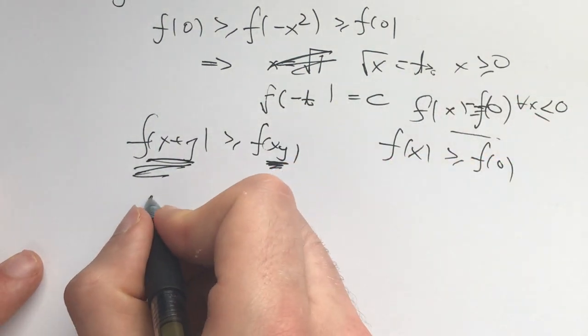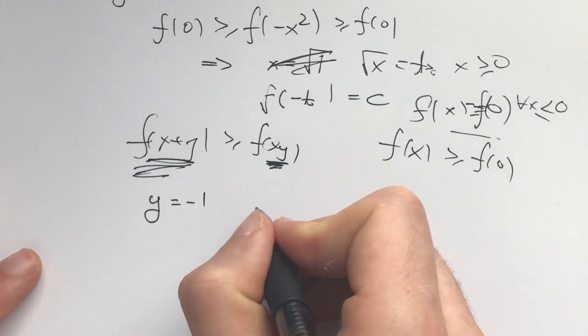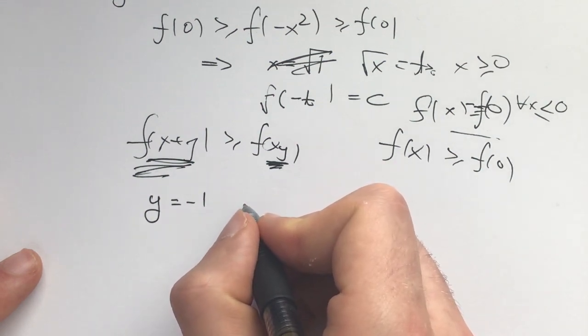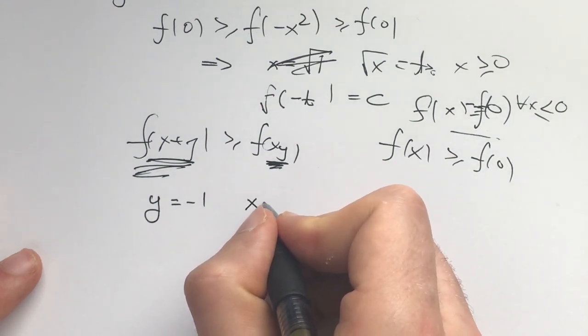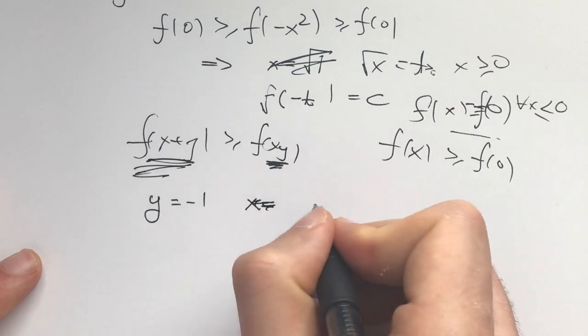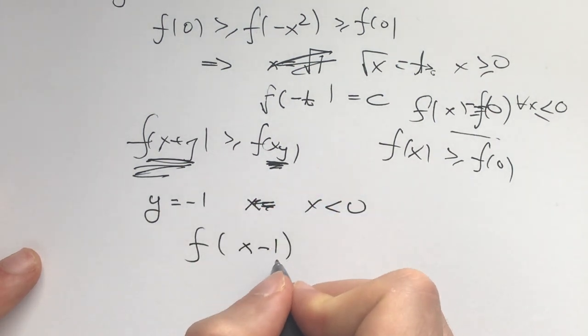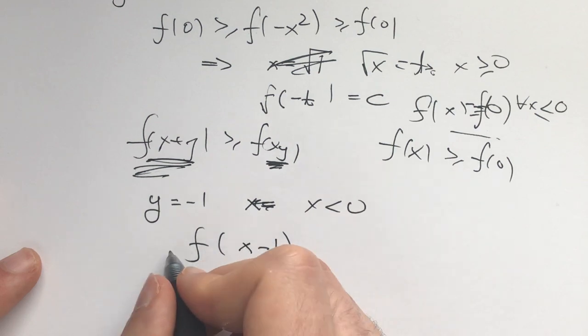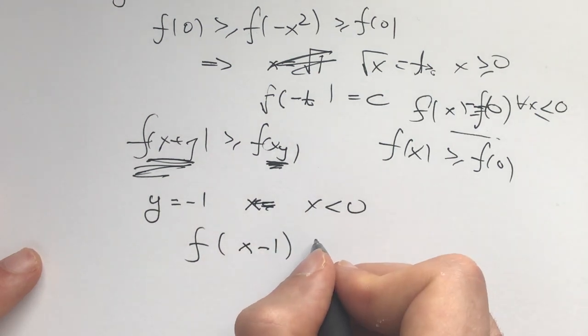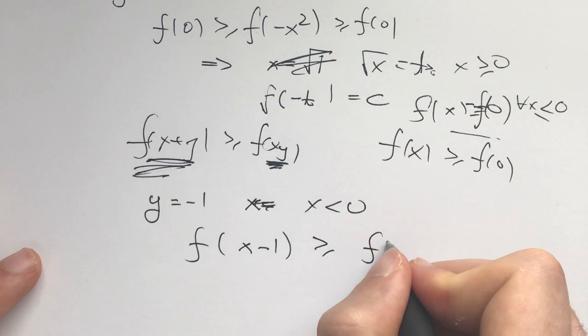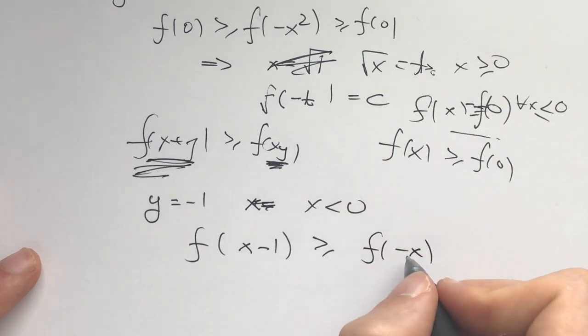To make things simple, let's plug in y=-1 and x equal to some negative x. Then we have f(x-1), which is a negative number. Negative plus a negative is a negative. This is greater than or equal to f(-x).